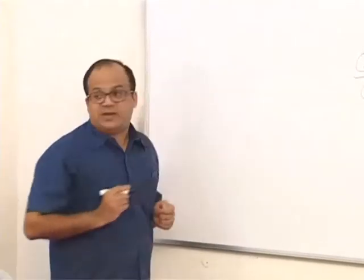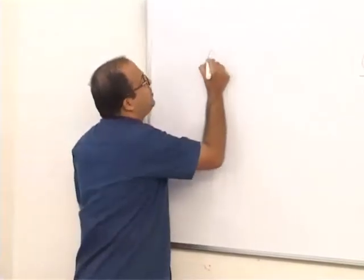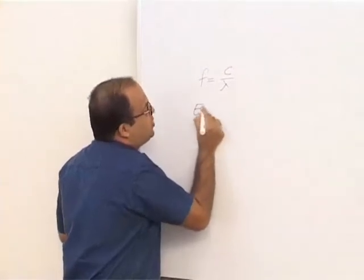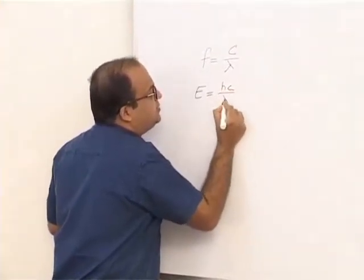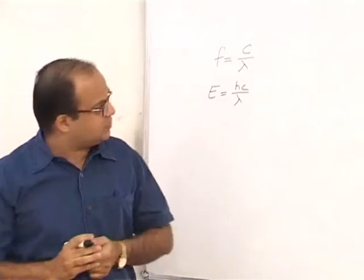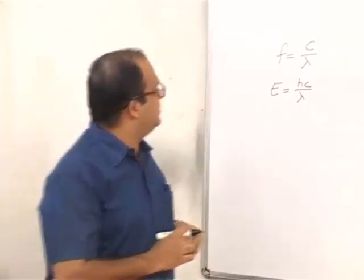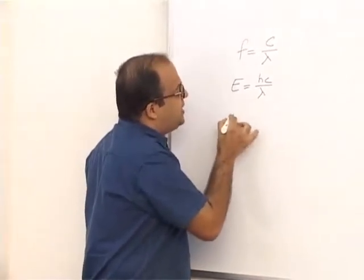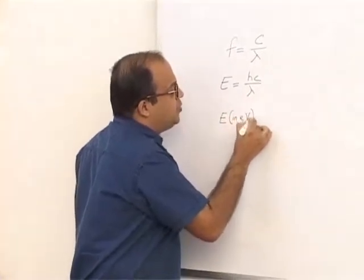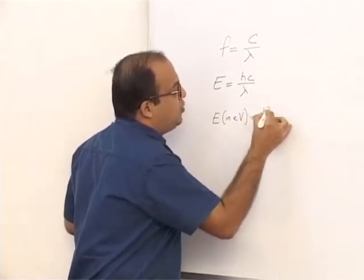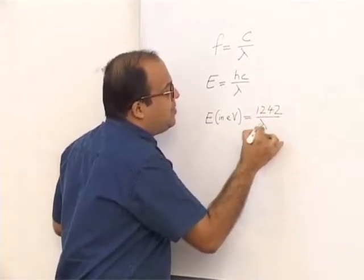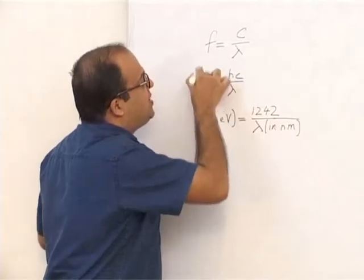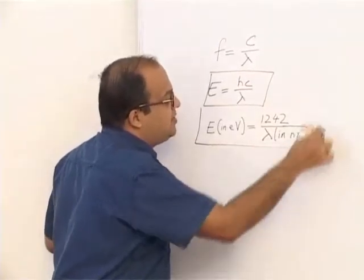Frequency is related to the speed of light and wavelength by F = c/λ, so we get E = hc/λ, where λ is the wavelength. In appropriate units, this equation becomes: E in electron volts equals 1242 divided by λ in nanometers. Memorize both of these equations.